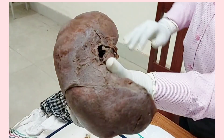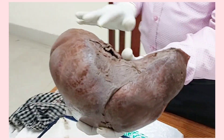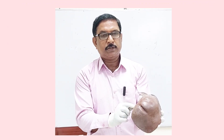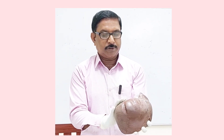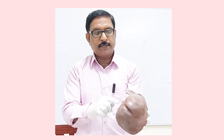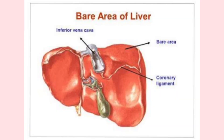If the bare area comes as a short note in an exam, you must write: what is meant by bare area, what are its boundaries, what is its situation, what are the contents, and what are its applied importance. Lastly, draw a diagram mentioning the base, apex, upper border, and lower border. That is all on the bare area of the liver.